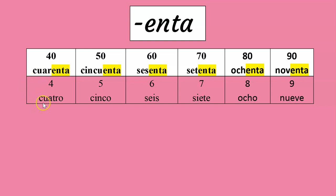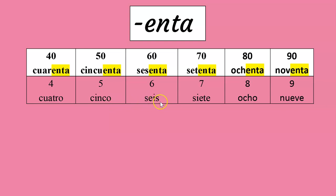40 has CUAR — the T and the O are removed. 50 has CINCU — the O is replaced with a U. 60 has SES — the I is removed. 70 has SET — the I is removed, and the E at the end is joined with the ending.